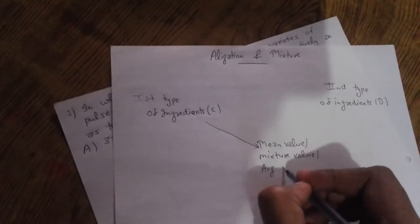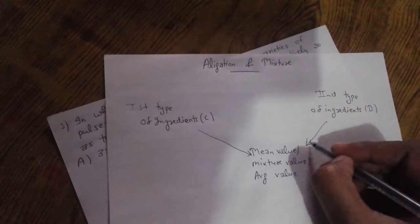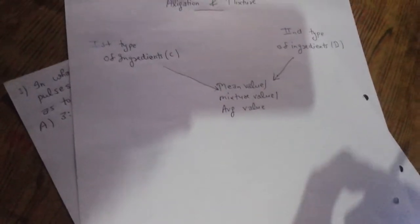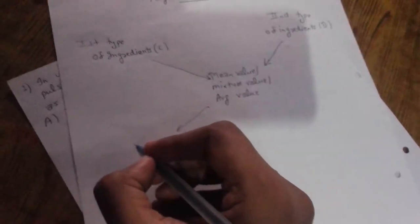We know that cheaper value is lowest value, average value is the middle value, and dearer is highest value. So it will become D minus M, and it will become M minus C.